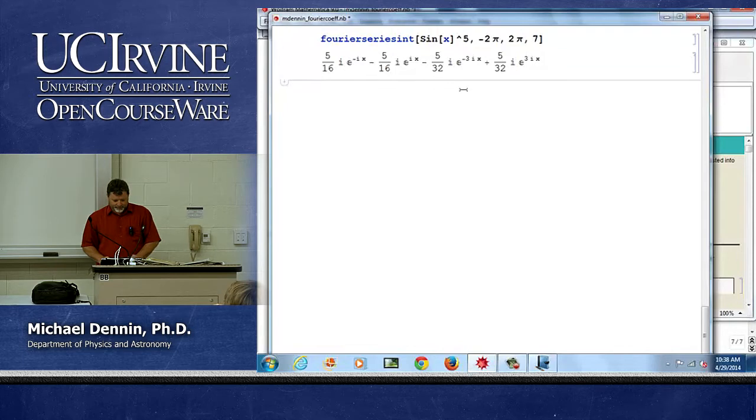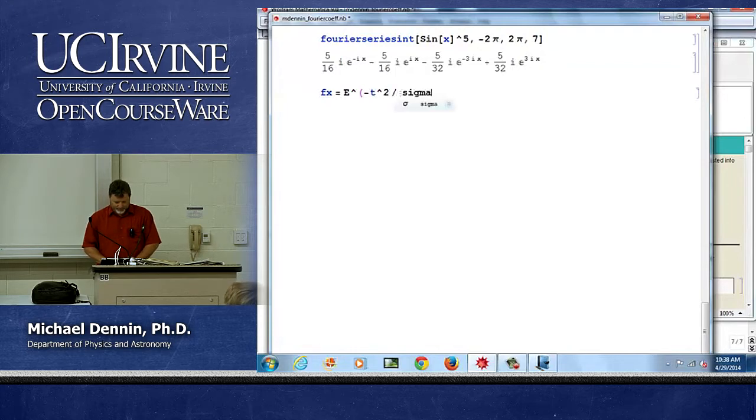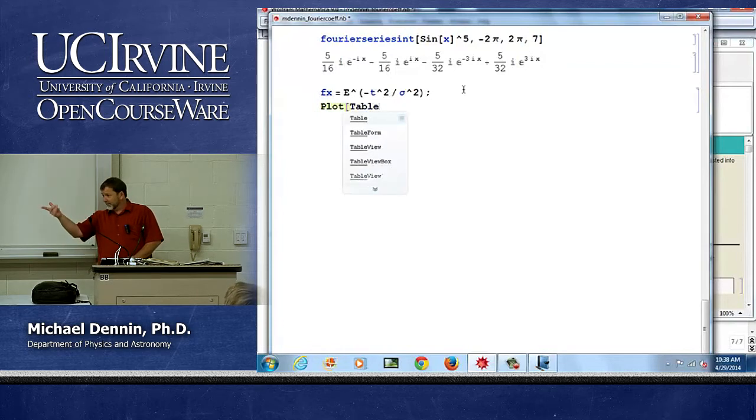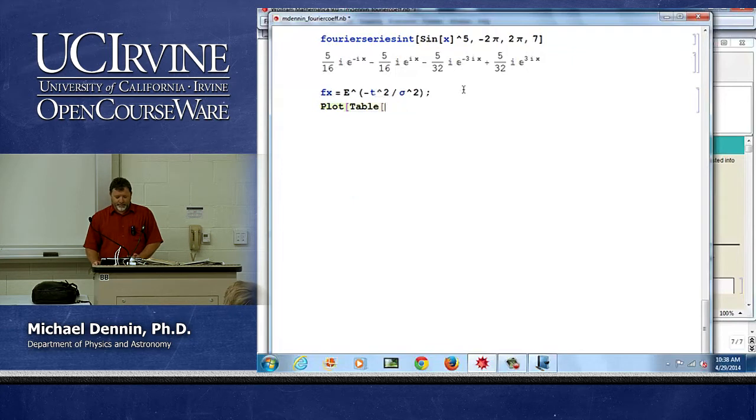So now imagine I have a function e to the minus t squared over sigma squared. What do we call this? It's a Gaussian. Very common. We draw it all the time.